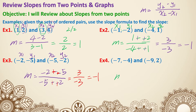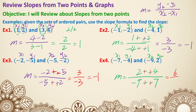Example 4. Slope: label the points x1, y1, x2, y2. So y2 minus y1 is going to be 2 minus negative 4. On the bottom, x2 minus x1 is negative 9 minus negative 7. Two negative signs change into positive — the top is 6. On the bottom, negative 9 plus 7 is negative 2. 6 over negative 2 simplifies to be negative 3. That is example 4.